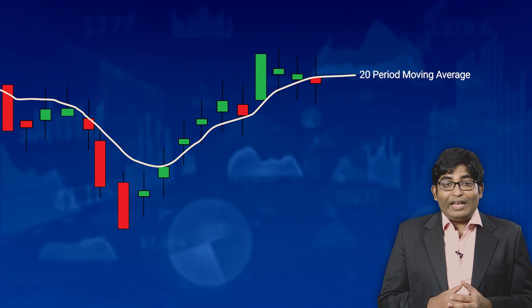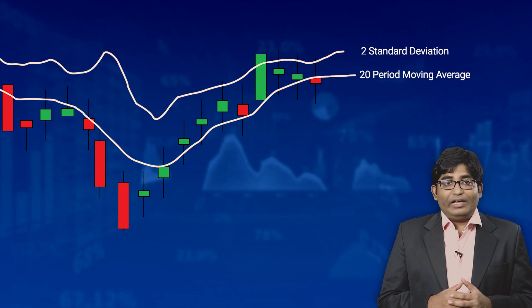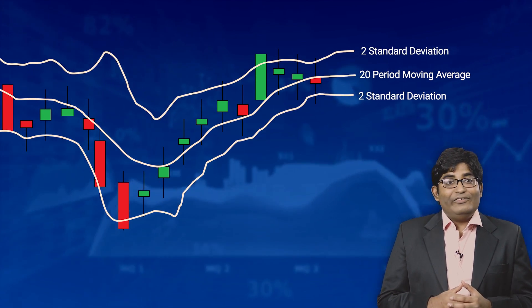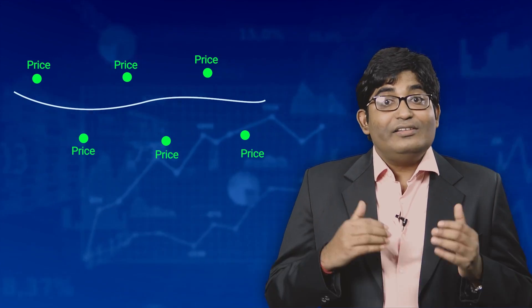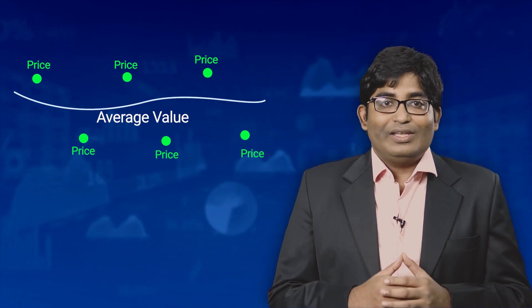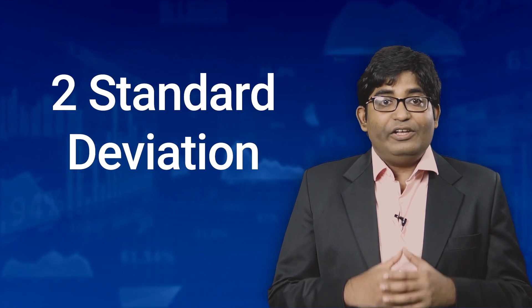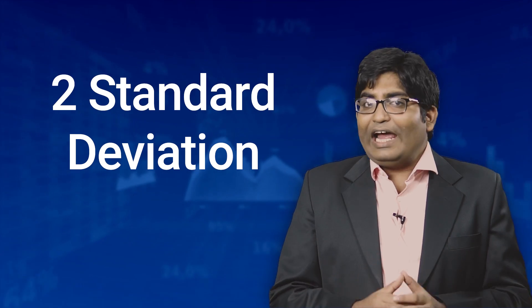This indicator was created by John Bollinger in the year 1980. Normally, analysts plot a 20-period moving average and plot two bands — one 2 standard deviations above and one 2 standard deviations below the moving average. Standard deviation (SD) is a statistical concept which describes how prices are dispersed around an average value. The importance of using two standard deviations is that it ensures 95% of the price data is within the full band range.